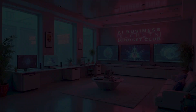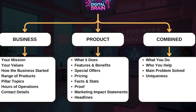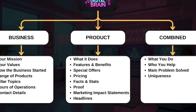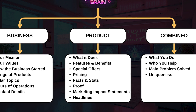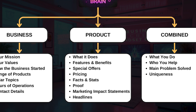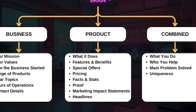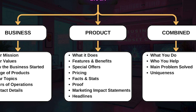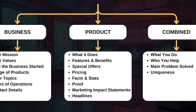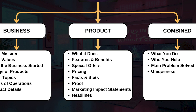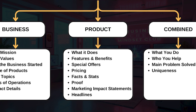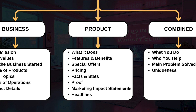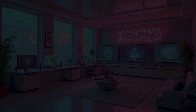You could also create another digital brain file for your main product. This is where you do a much deeper dive on what your product does — all the features and benefits, special offers, pricing, facts and stats, the proof of efficacy, and even compelling marketing details such as impact statements, problem-solution statements, headlines, and maybe even testimonials.